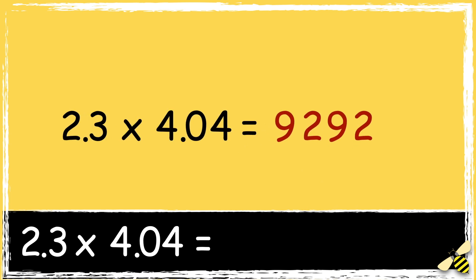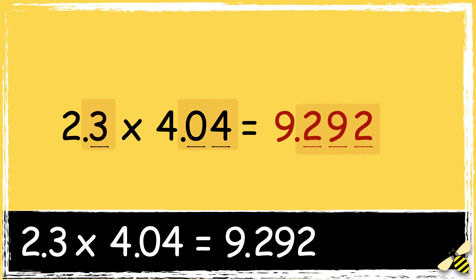We need to place the decimal point in the answer. To do this, we count the number of decimal places in the factors. 2.3 has one digit after the decimal point, and 4.04 has two digits after the decimal point. Altogether, there are three digits after the decimal point in the factors. So we need to ensure that there are three digits after the decimal point in our answer. So the answer is 9.292.